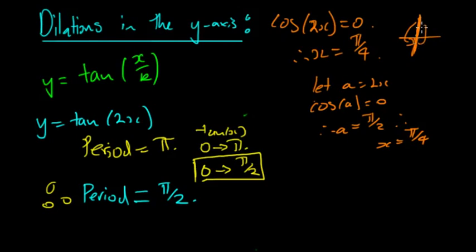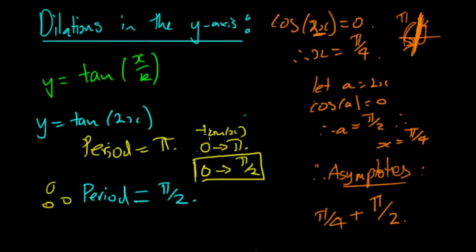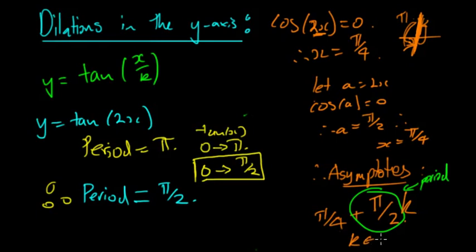From the unit circle, cosine is 0 at π/2 and then repeats every π. So the asymptotes occur at π/4, and then π/4 plus the period π/2 for each subsequent one. The general form is x = π/4 + (π/2)k where k is an integer, going in both positive and negative directions.